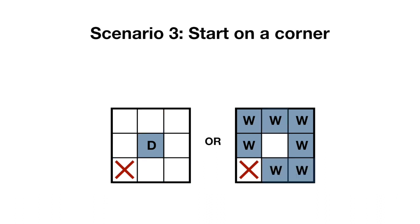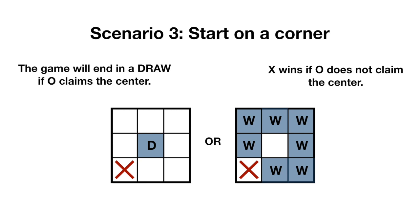The last position to consider is if x claims the corner for their first move. In this case, the game will end in a draw with best play if O claims the center, but if O doesn't claim the center, x should win. There are so many ways for x to win with this strategy that a corner move might be the best possible first move.